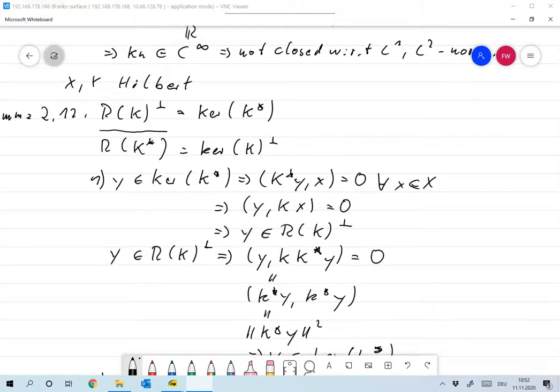So is it clear that we have to use the closure over here? Yes, because I mean the right hand side is always closed. This is the perp so that is closed, and so the left hand side must be closed as well.